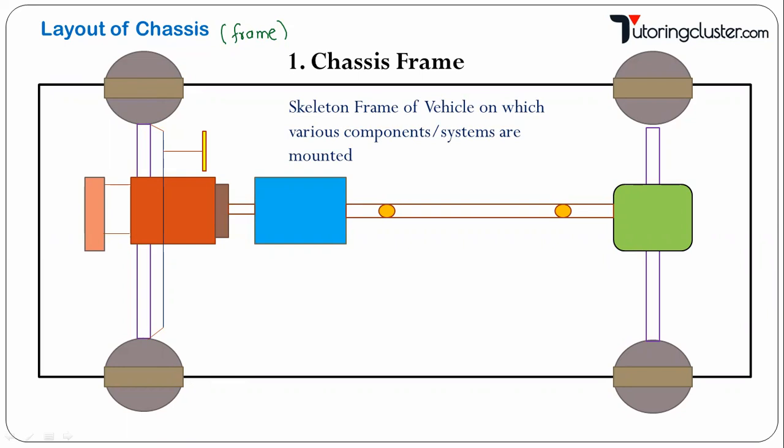All the different components or systems of a vehicle are mounted on one frame. What is the name of that frame? The name is chassis. It is the most significant component of the automobile.